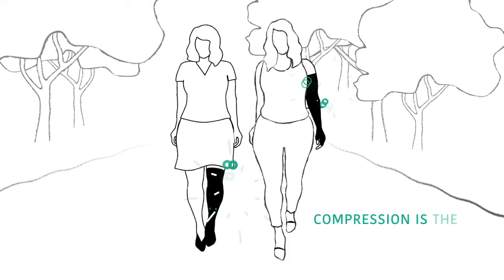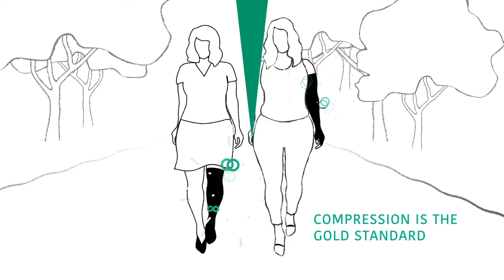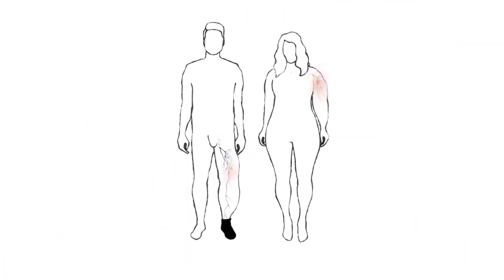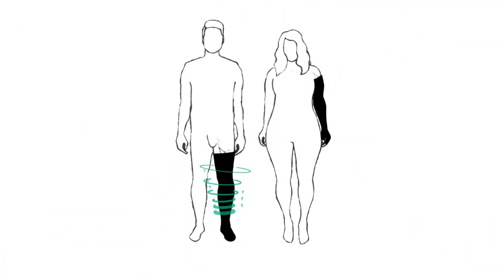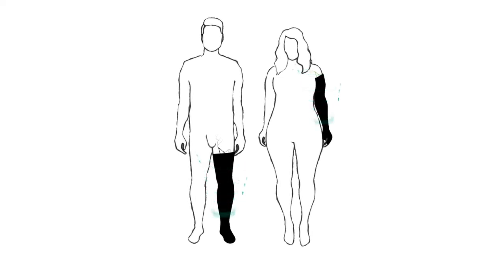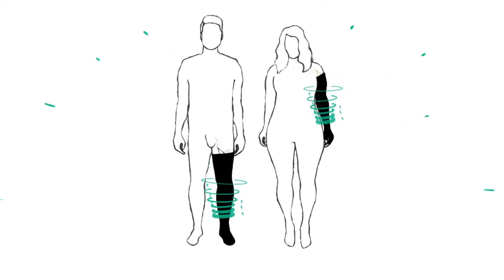Every stage of lymphedema can be helped by graduated medical compression. A graduated medical compression garment helps control swelling and increases your range of motion. And the more you move, the better your lymphatic system works.